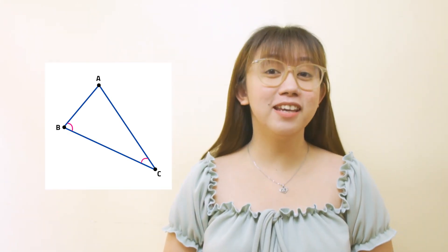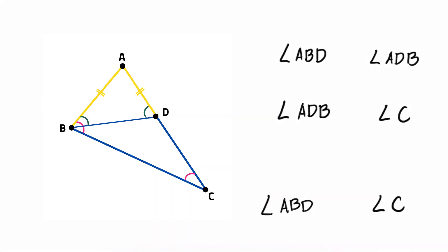Show that angle B is greater than angle C. Since side AC is larger than side AB, we take a point D on side AC such that side AB equals side AD. In triangle ABD, since side AB equals side AD, by the greater side or greater angle theorem, the angles opposite these equal sides must be equal, so angle ABD equals angle ADB. Now, angle ADB is an exterior angle for triangle BDC, which means angle ADB is greater than angle C. Thus angle ABD is greater than angle C. Finally, since angle B is greater than angle ABD, we have angle B is greater than angle C.